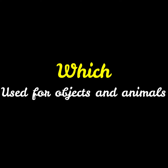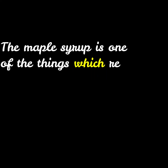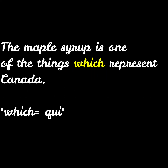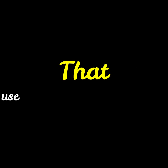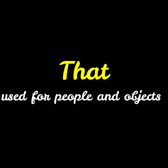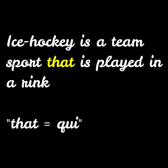'Which' is used for objects and animals. For example: 'The maple syrup is one of the things which represent Canada.' 'That' is used for both people and objects. For example: 'Ice hockey is a team sport that is played in a rink.'